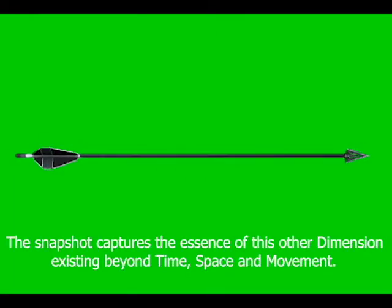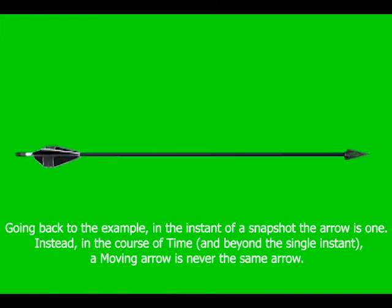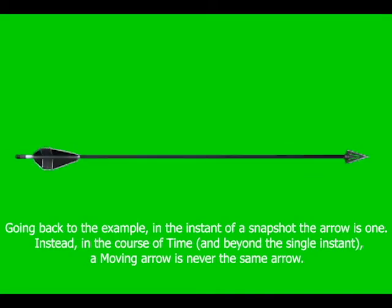The snapshot captures the essence of this other dimension, existing beyond time, space, and movement. Going back to the example, in the instant of a snapshot the arrow is one. Instead, in the course of time and beyond the single instant, a moving arrow is never the same arrow.